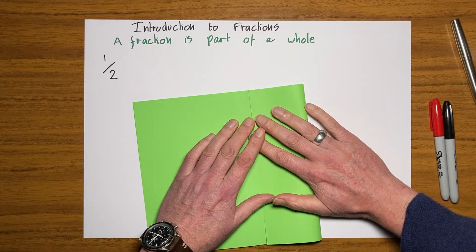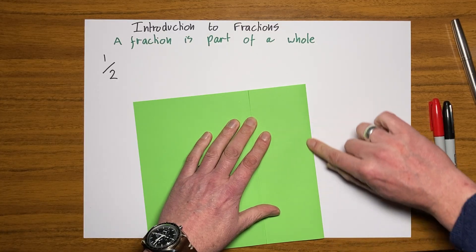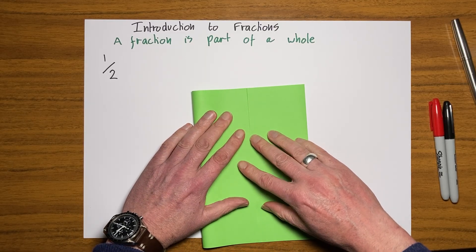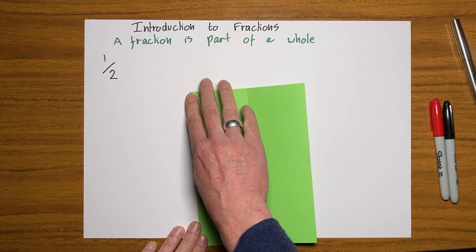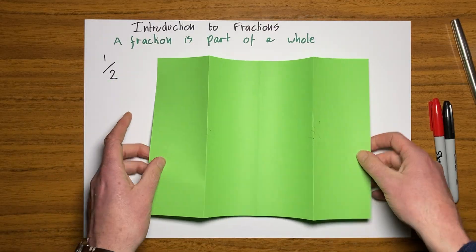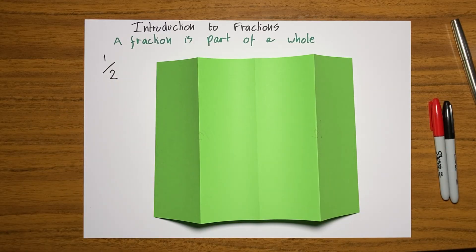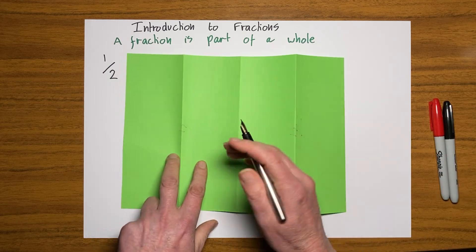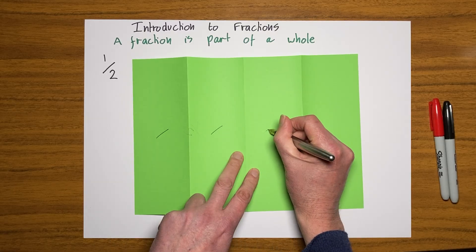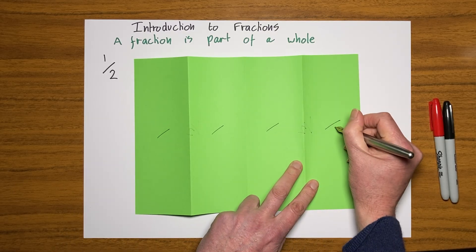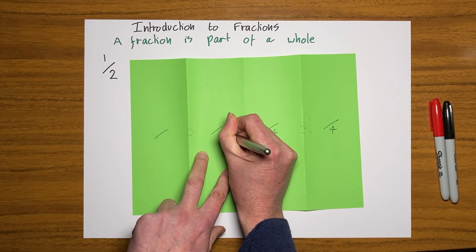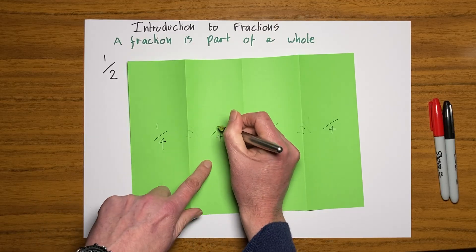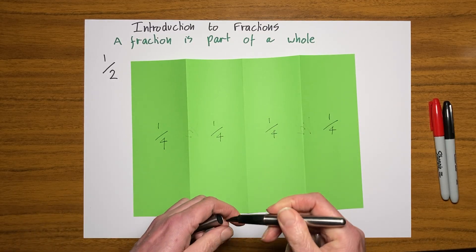Fractions are very closely connected with dividing. And you'll remember when I spoke to you about dividing that the important thing with dividing is that it's equal — and it's exactly the same with fractions. The bits that you split your whole into have to be equal. So let's turn this over. I have now split my whole into one, two, three, four. The bottom number has to be four because I've split it into four bits. And that is one out of four — so it's going to have one here because each of those is a quarter.